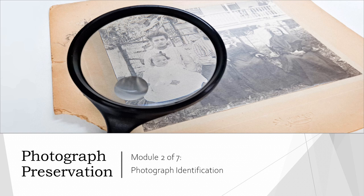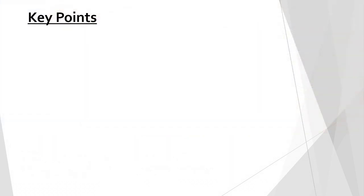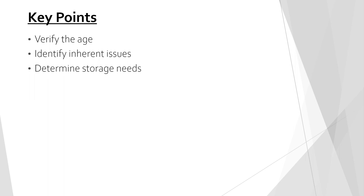Welcome to Module 2 of our Photograph Preservation Workshop. This module will cover methods to identify photographs and photographic prints. There are some important reasons why knowing the type of photograph is essential. It can help verify the age of the photograph for historical information or veracity. It will let us know if there are inherent issues or concerns with the materials used to create the photograph, and most importantly it will determine what type of storage the photograph needs so that it can survive for future generations.